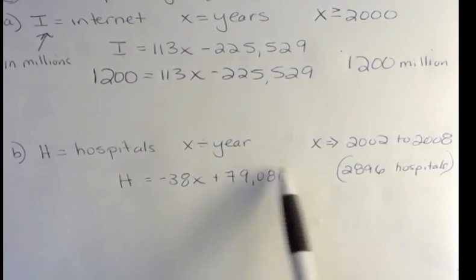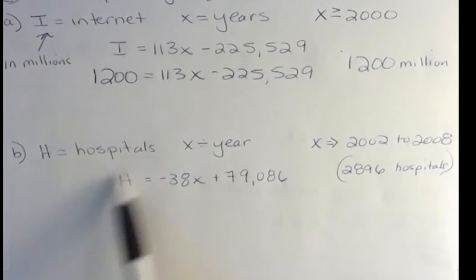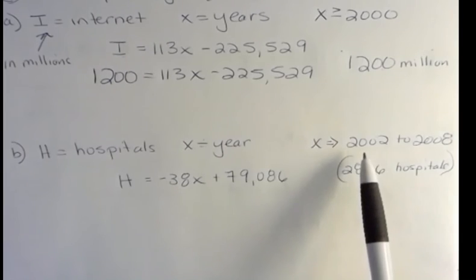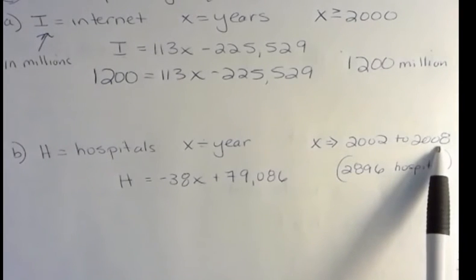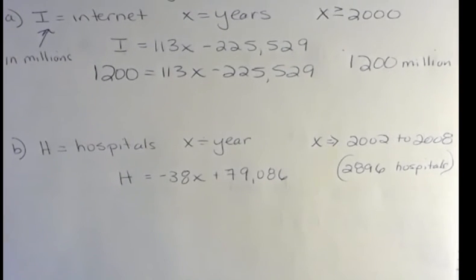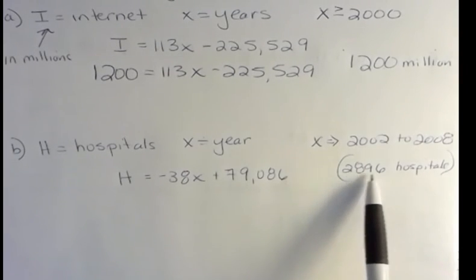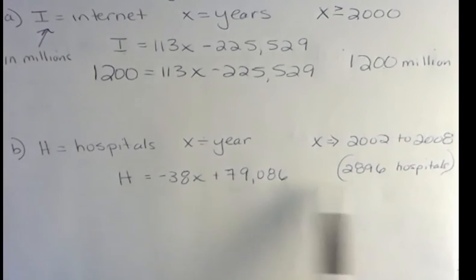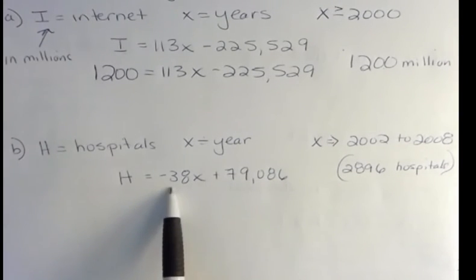And so they're saying this equation describes the number of hospitals between 2002 and 2008, which says that after 2008, something else described it. Before 2002, something else described it. This is just for the years 2002 to 2008. So then they say, when will we have 2,896 hospitals? Well, before I do that, let's look at this for a second.